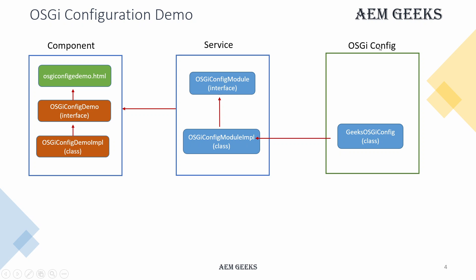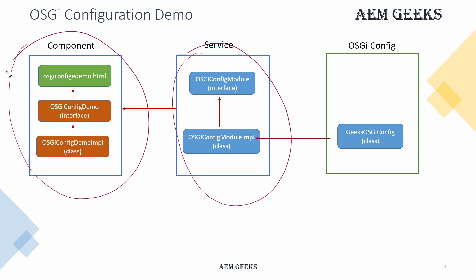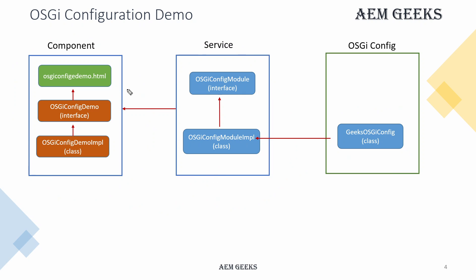So this is our demo. I have a GeeksOSGI configuration, and I will call this OSGI configuration in a new service. The values I will return just for display purposes. This is the component I used in the previous tutorial as well — whatever I configure here, I'll pass it on and we'll display it. Ideally you always use this configuration in your backend itself, but just for demo purposes I'll show you here.